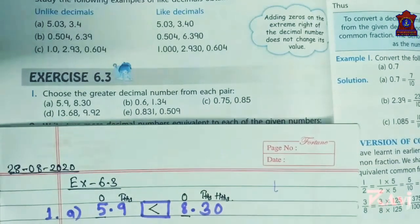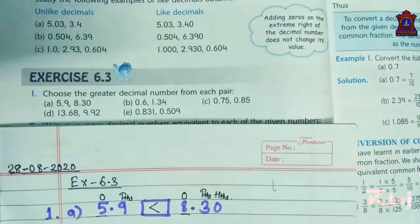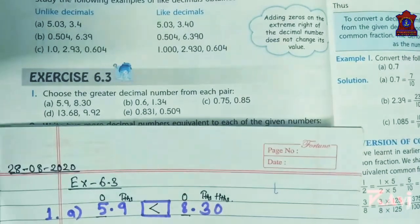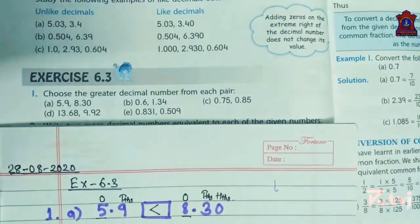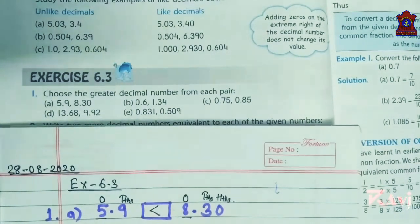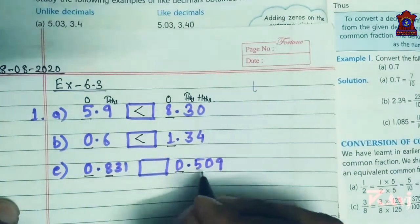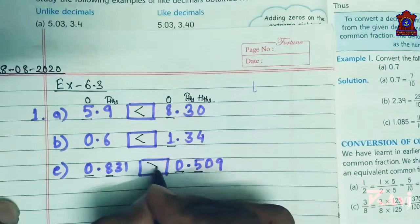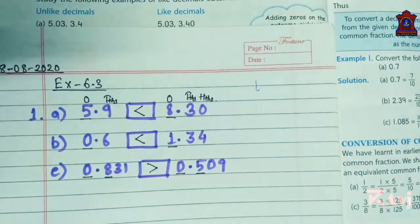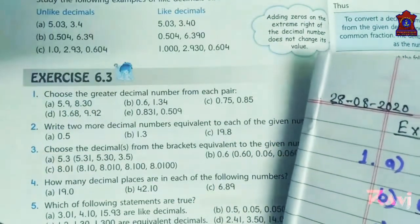I'll do one more — question E: 0.831 and 0.509. At the ones place both are 0, equal. After the decimal, at the tenths place there is 8 here and 5 here. So 8 is greater. In this manner solve the question. Questions C and D are homework.